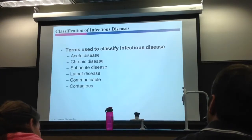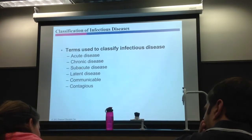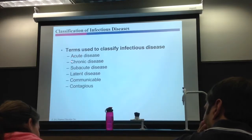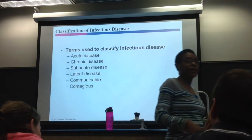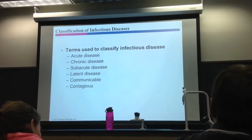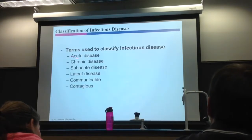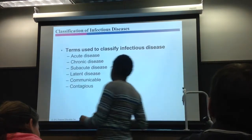Subacute basically goes between acute and chronic in terms of how long it lasts. Bacterial endocarditis — a bacterial infection of the heart valves — is an example of a subacute disease. It falls right in between acute and chronic.